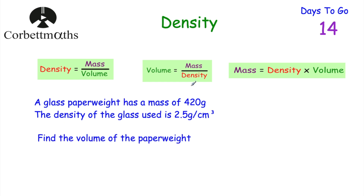Next question: a glass paperweight has a mass of 420 grams. The density of the glass used is 2.5 grams per centimetre cubed, meaning every centimetre cubed of this glass has a mass of 2.5 grams. The question asks: find the volume of the paperweight. Press pause now and work out the volume.